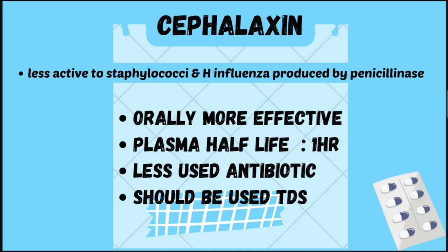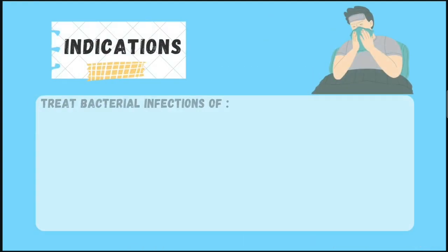Now we'll see cephalexin. Cephalexin is less active against staphylococci and H. influenzae, which are resistant because they produce penicillinase. Penicillinase are enzymes produced by bacteria which are resistant to penicillin. Cephalexin is orally more effective, with a plasma half-life of one hour.